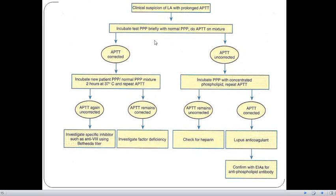This is a basic step for clinical suspicion of lupus anticoagulant with prolonged activated partial thromboplastin time. We have to incubate test platelet poor plasma with normal PPP and do APTT on mixture. If APTT is corrected, we have to undergo the procedure. And if APTT is uncorrected, then incubate PPP with concentrated phospholipid and repeat the APTT.